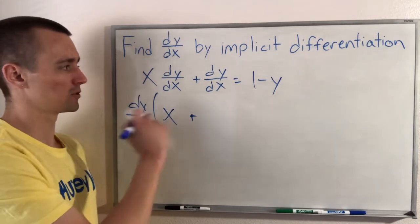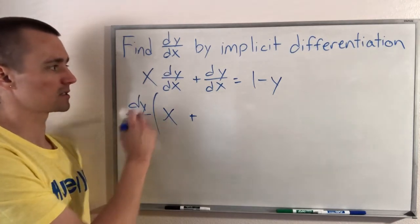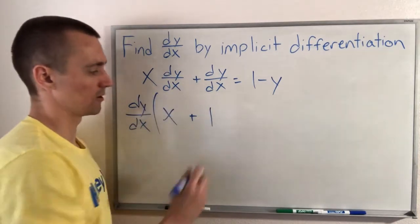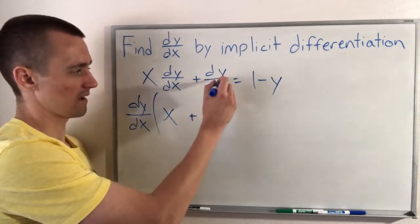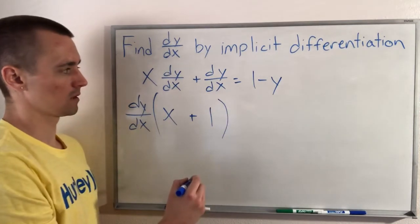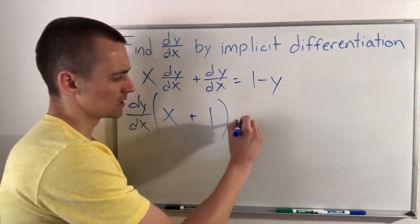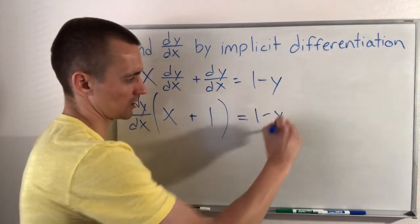What you want to think about is, what would we need to multiply by dy/dx to get dy/dx? Well, it would just be 1, right? dy/dx times 1 would get us back to having a dy/dx over here. So now over here, we're still just going to have 1 minus y.